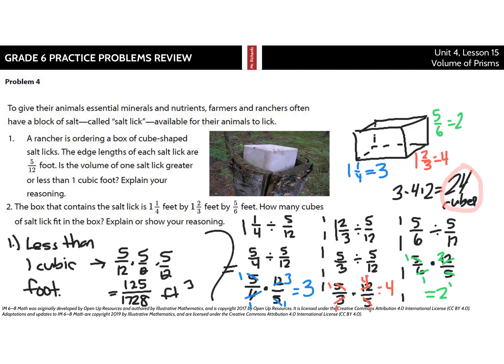Now, another rectangular prism question. In fact, to give their animals essential minerals and nutrients, farmers and ranchers often have a block of salt called salt lick available for their animals to lick. A rancher's ordering a box of cube-shaped salt licks. The edge lengths of each salt licks are five-twelfths of a foot. Is the volume of one salt lick greater or less than one cubic foot? Explain your reasoning.